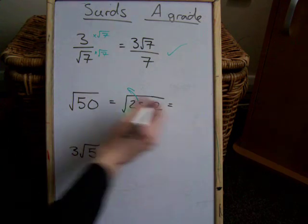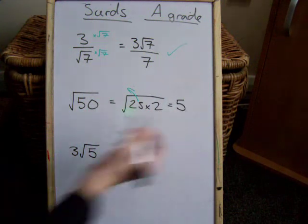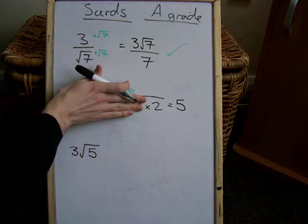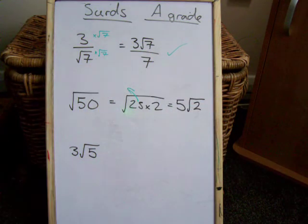So what happens is the 25 comes out, and that becomes a 5. The square root of 25 is 5, and then you're left with whatever you had in the third with it, which in this case was 2. So that is 5 lots of the root of 2.